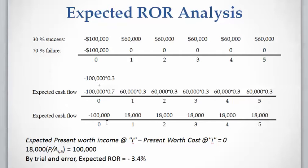We calculate the summation, writing the expected cash flow for each year. For year zero, the $100,000 investment is common to both failure and success scenarios so it stays unchanged. For years one through five, because income only occurs in the success scenario, we multiply the $60,000 by 30% to get $18,000 per year. We can then calculate the rate of return the same way we do for a standard cash flow.